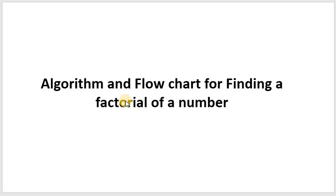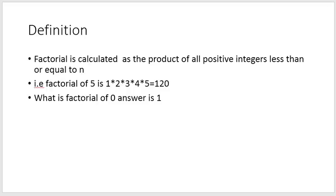Now coming to the factorial of a number — how do you find a factorial of a number? Suppose you take 5 as a number, then what is the factorial of 5? Factorial of 5 is 120. How do you get this? You say it as 1 into 2 into 3 into 4 into 5, that is equal to 120. That means when you take a number, it is the product of all positive numbers which is less than or equal to n.